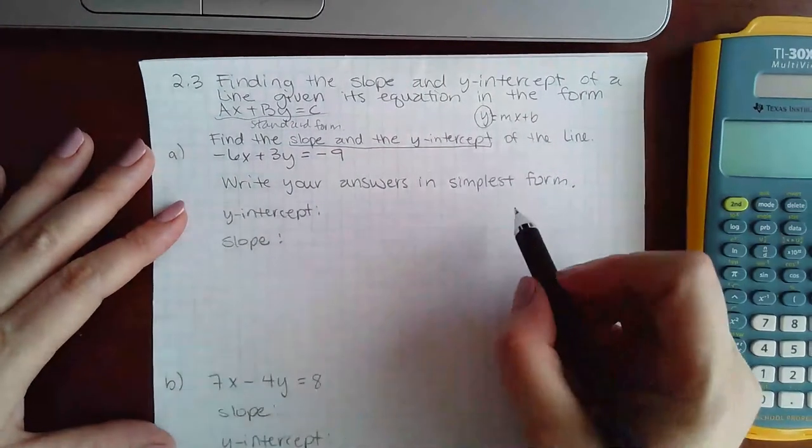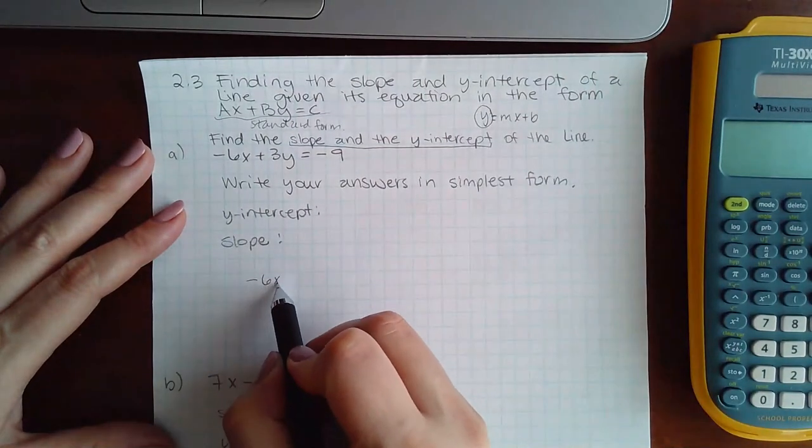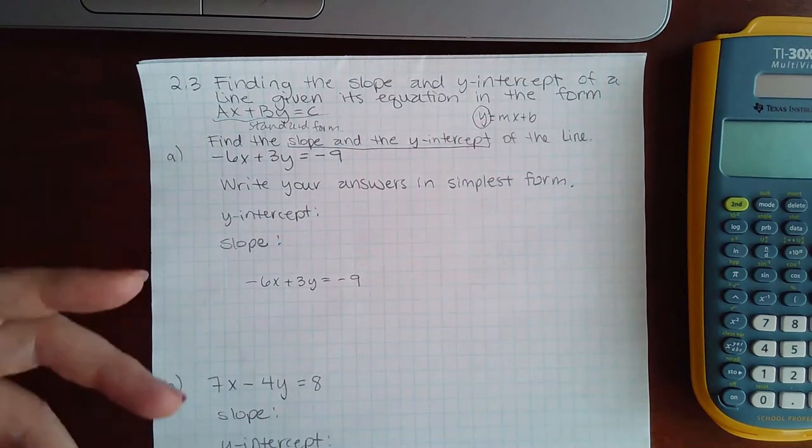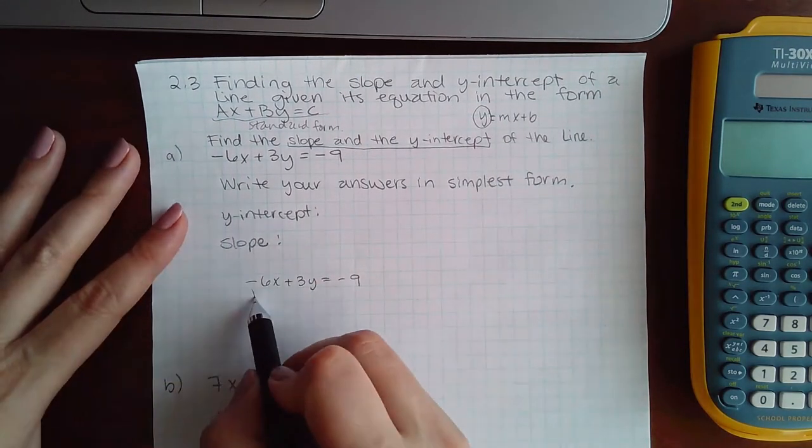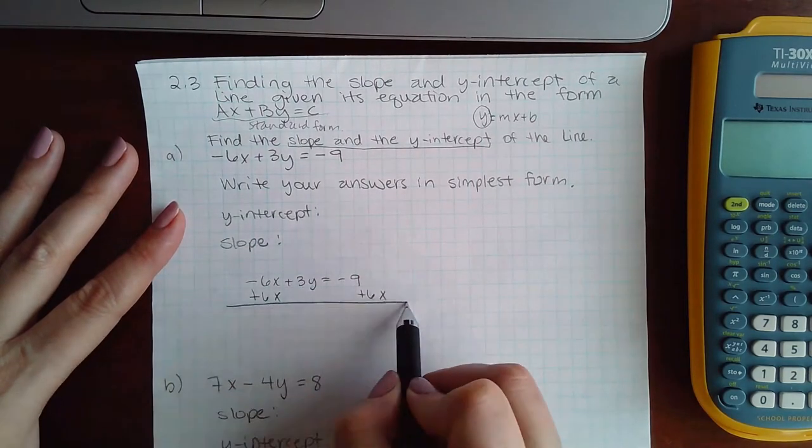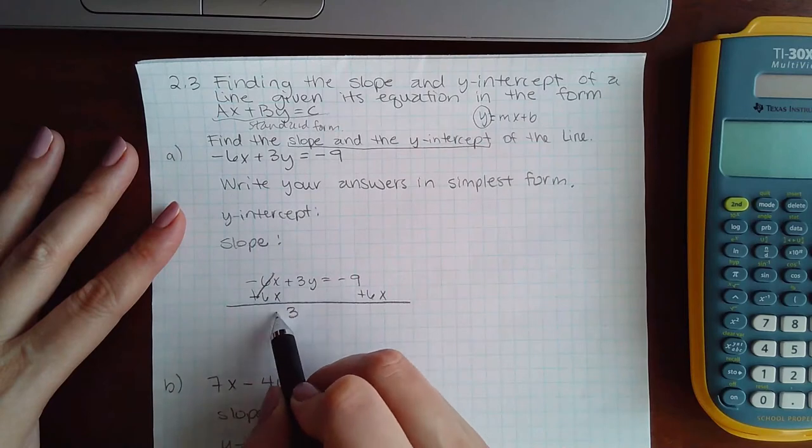So I'm going to take my equation over here, negative 6x plus 3y equal to negative 9, and I'm going to attempt to get y by itself. So what I'm going to do is I'm going to add 6x to the other side and I get positive 3y.